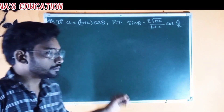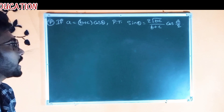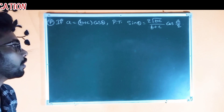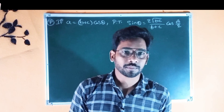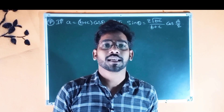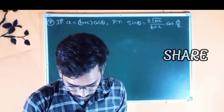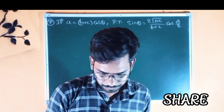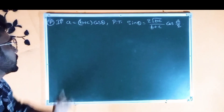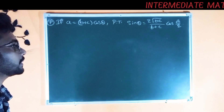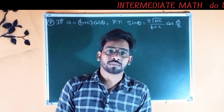This problem is important. If a is equal to (b + c)cos θ, prove that sin θ is equal to 2√(bc) / (b + c) · cos(A/2). This problem is the same model as the last class. So sin θ is equal to a / (b + c).